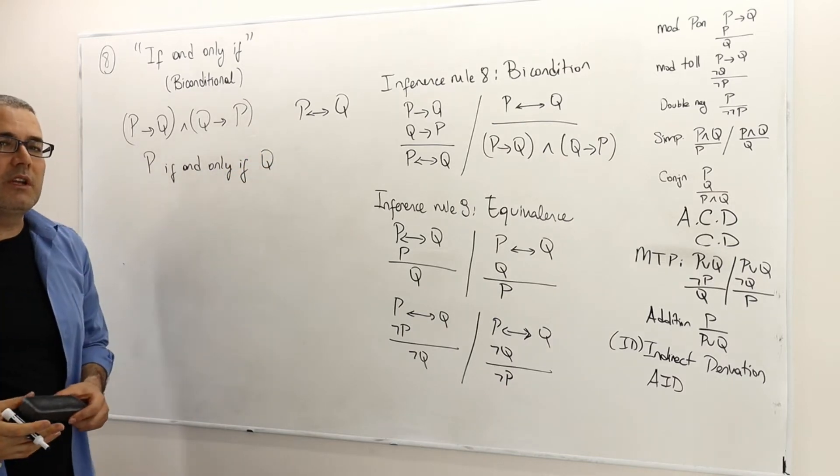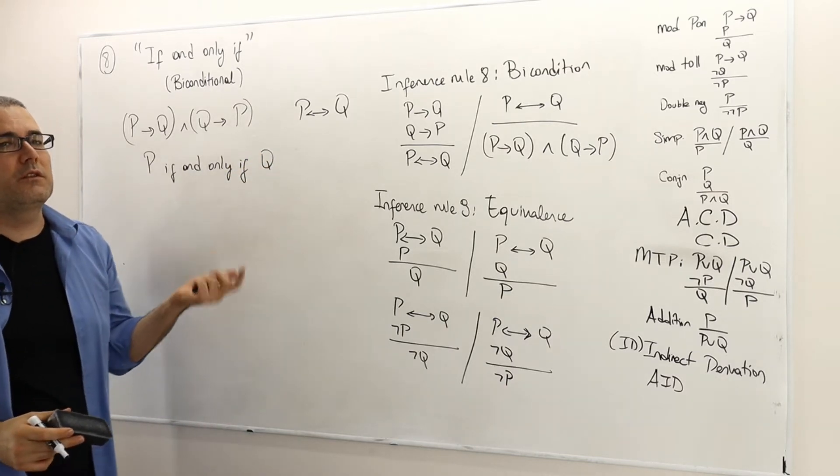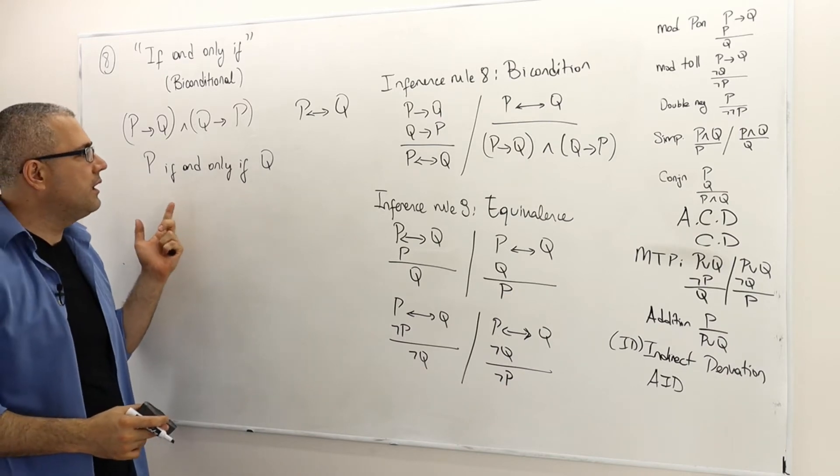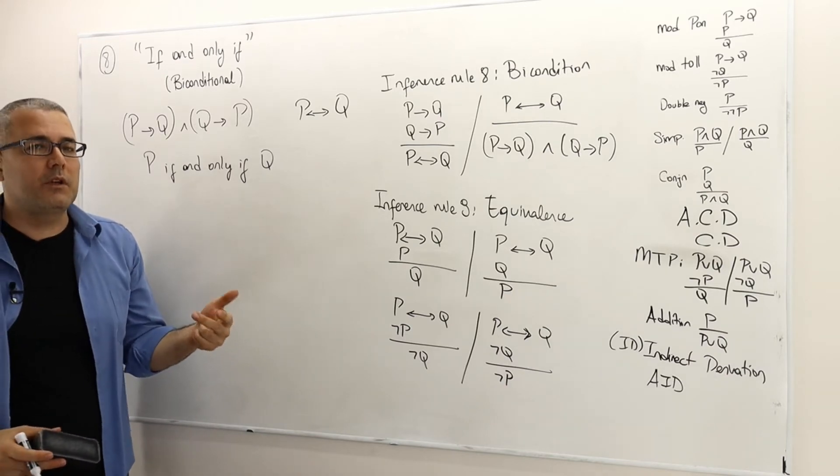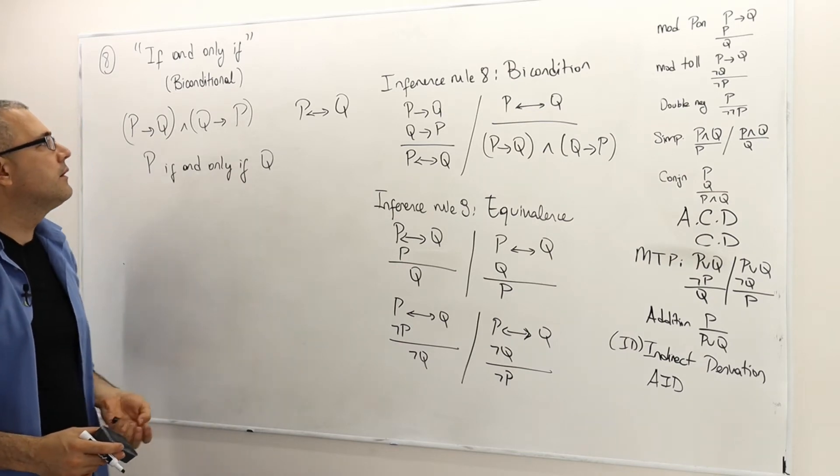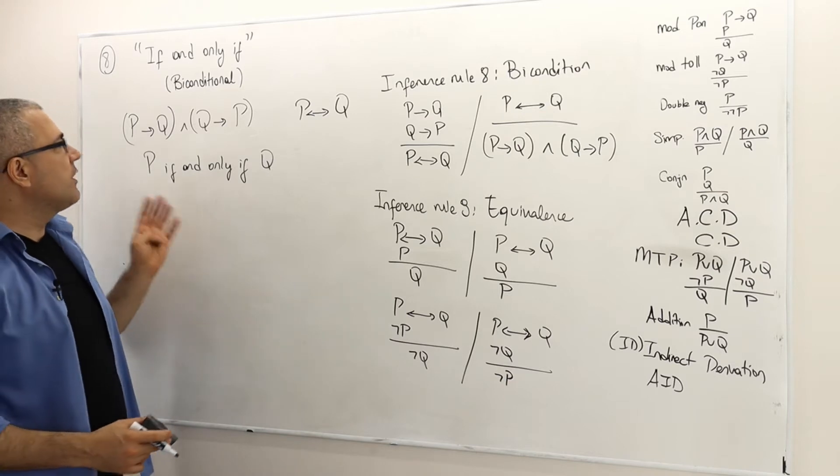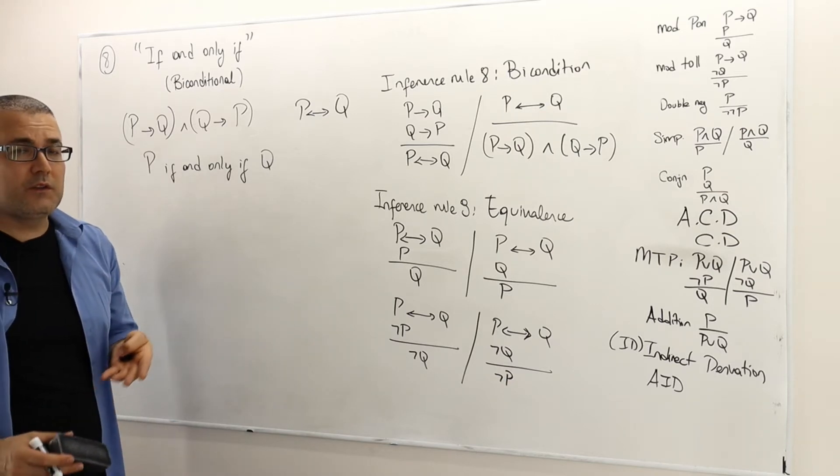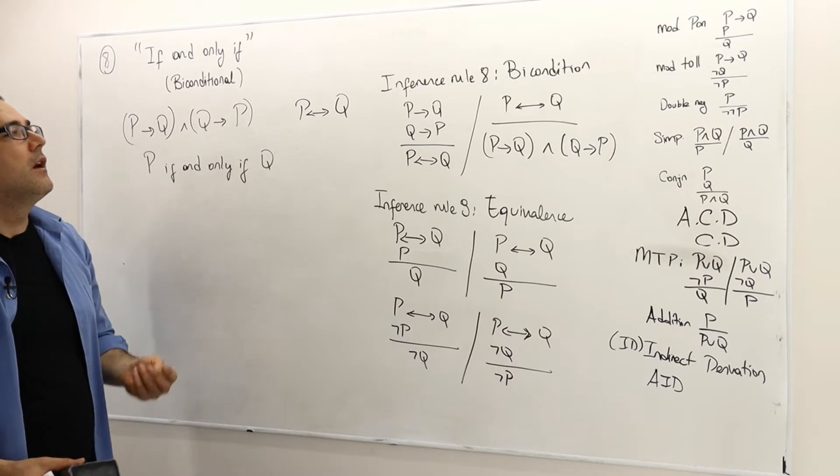Sometimes we read this p is a necessary and sufficient condition for q, equivalently q is a necessary and sufficient condition for p, or sometimes we call them as p is equal to q. So if p and q are sentences, then p if and only if q is also a sentence.